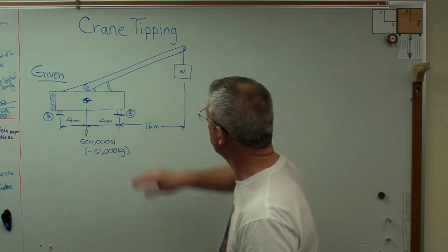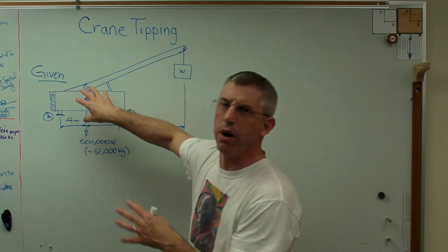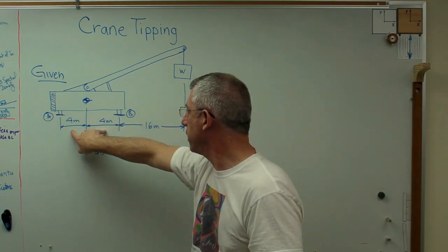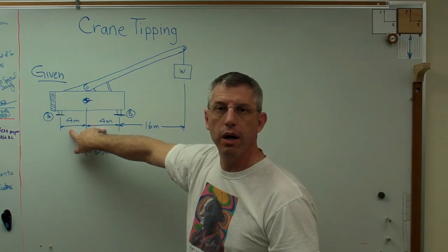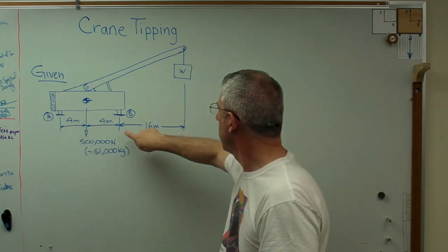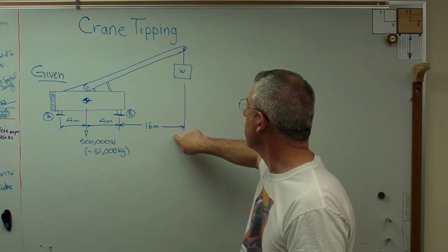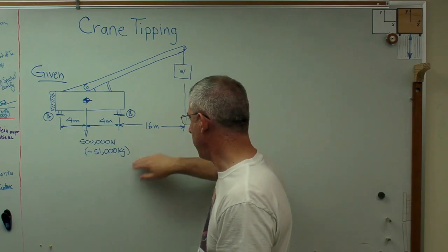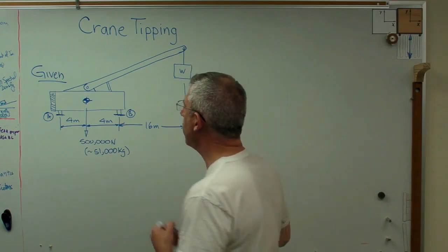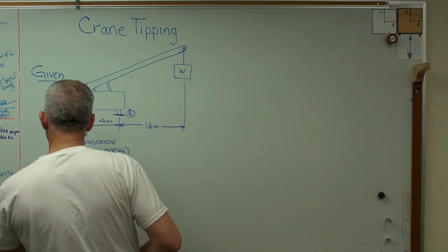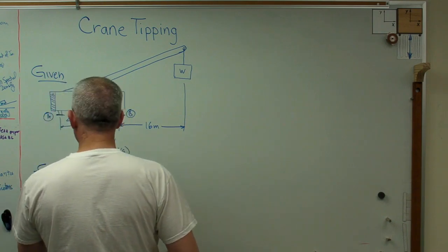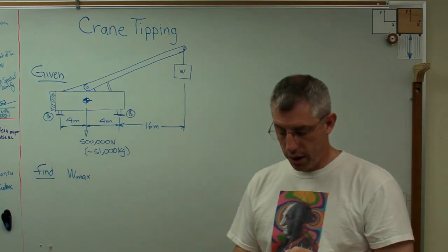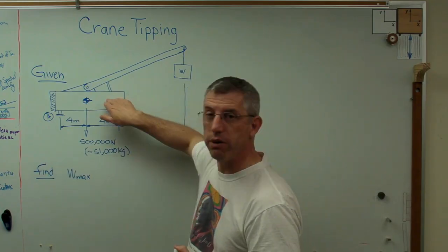So what we're going to do here is we're going to look at this crane right here and they're more complicated than this, but this is pretty much what one looks like. It's the body part of it, I guess you'd call it, is eight meters long and the center of gravity is in the middle and the boom reaches out 16 meters with a big weight on the end of it. Now I know this isn't really to scale, but you get the idea here. So I'm given all that now. Remember in GFSA format, the next thing is find. Well, if what I'm trying to find is W max, what's the maximum weight that this crane can lift without tipping over?